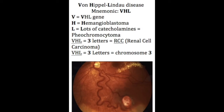VHL is also associated with what type of cancer? VHL is associated with renal cell carcinoma. Lastly, there is also an association with pheochromocytoma.